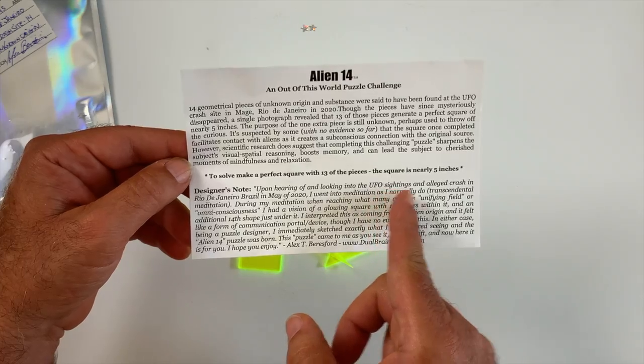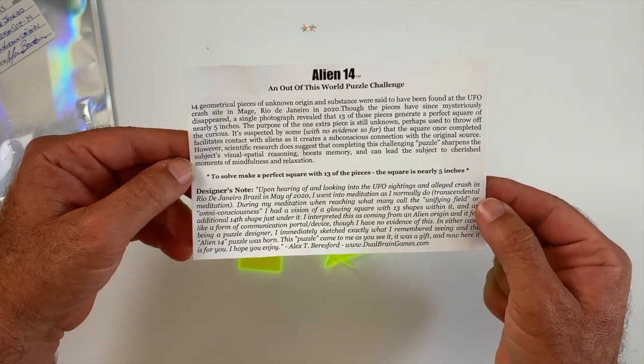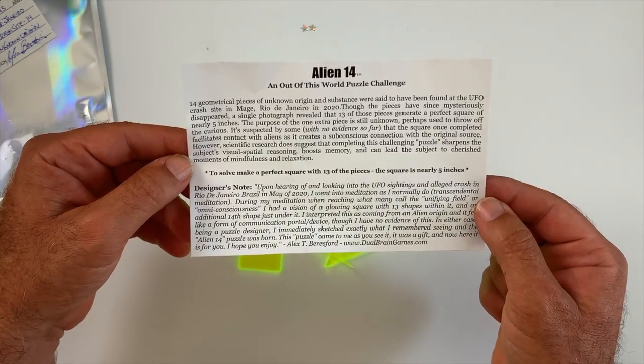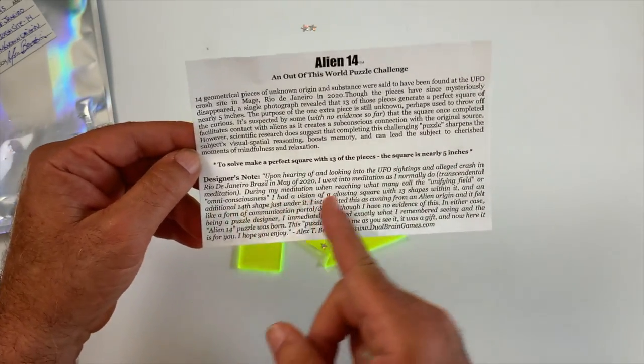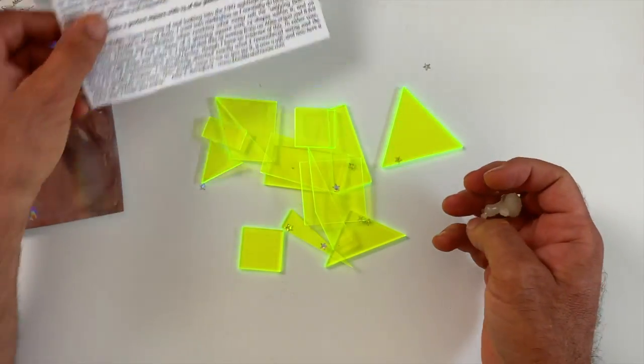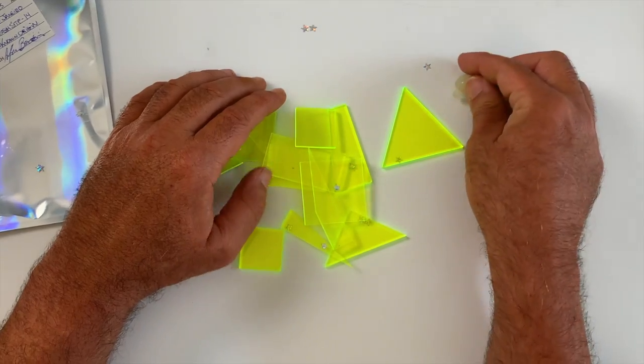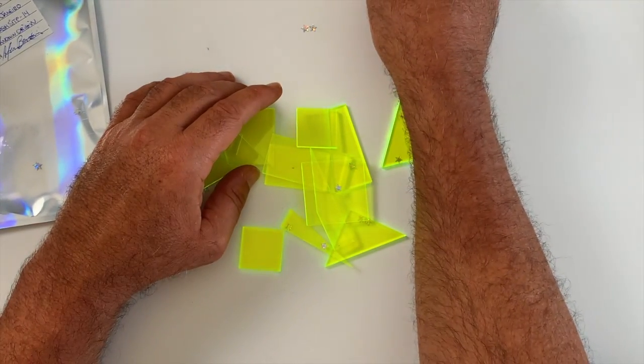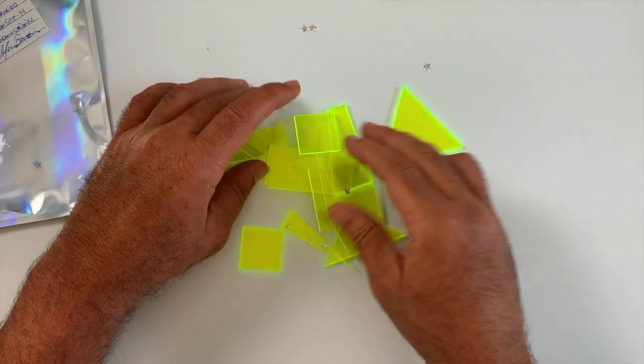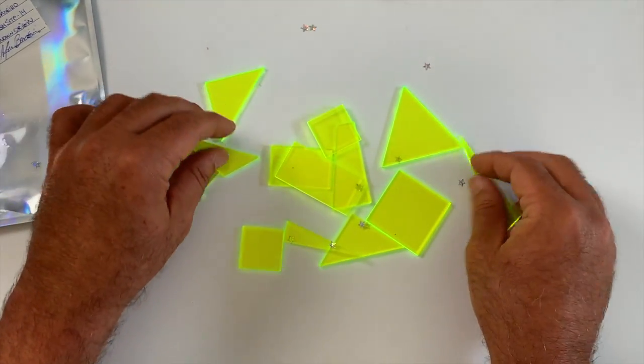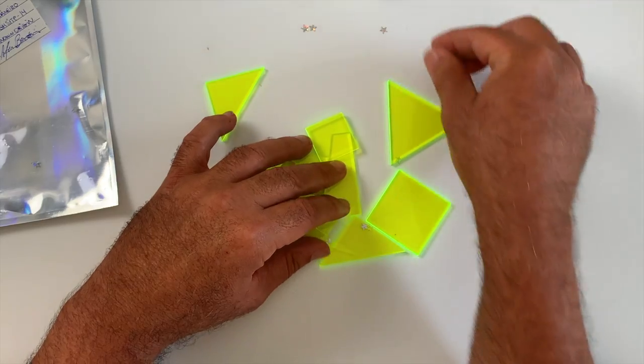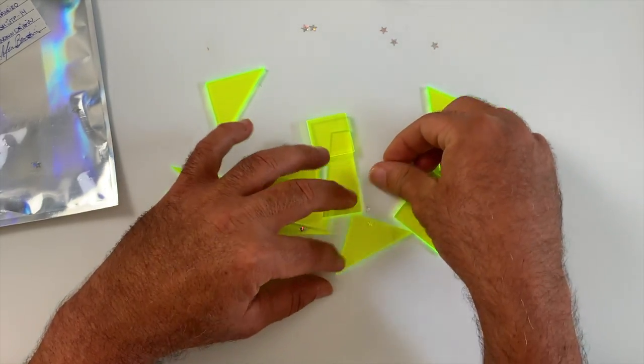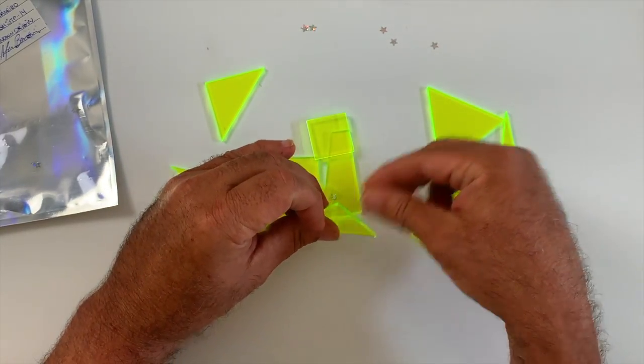The square is nearly 5 inches. There's a designer's note here you can take a look at that when you get it. I love the little glow-in-the-dark alien though, that's pretty cool. So we'll leave them here.